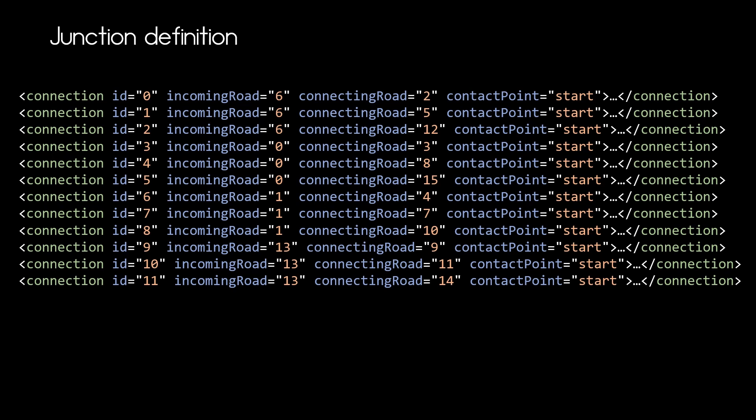And here they are again. Our 12 connections. Each connection has an ID for identification. A designated incoming road identifying the road coming into the junction, one of the four we saw before. And a connecting road. This contains the ID of the road within the junction that is a connecting road.